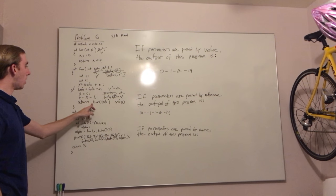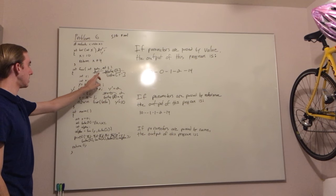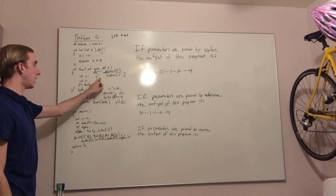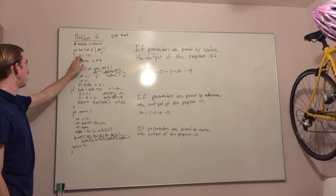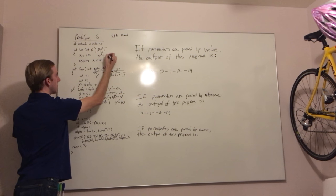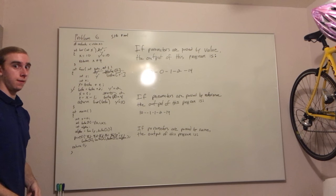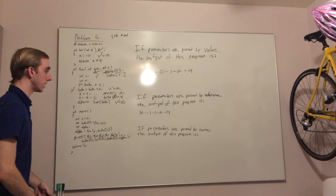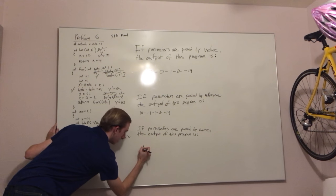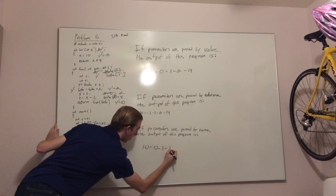Then we call bar on beta, which in this case is y prime, and we set that to 10. So y prime equals 10, same as last time, and we return 14. The final output for passed by name is 10, 0, 1, 1, and 14.